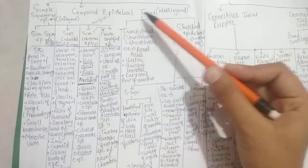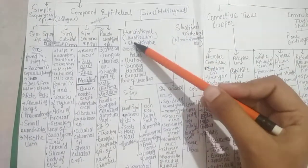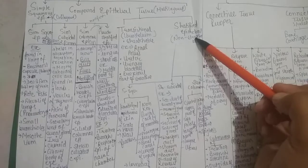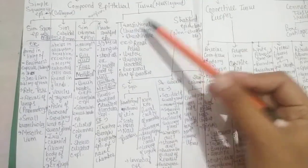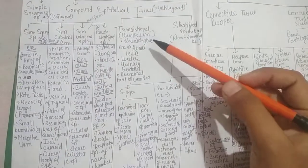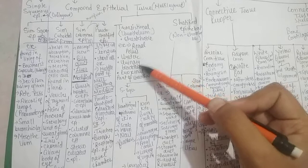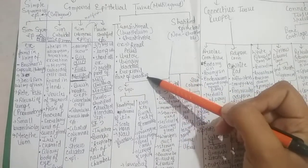Then compound epithelial tissue, which is multilayered and can be further divided into transitional and stratified epithelium. Transitional epithelium, also known as urothelium, is stretchable. Examples: renal pelvis, ureter, urinary bladder, proximal part of urethra.